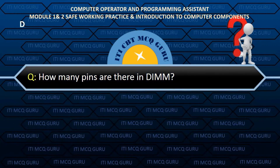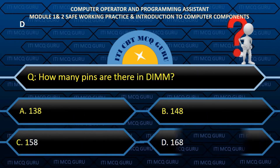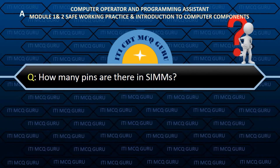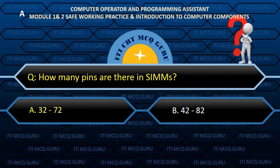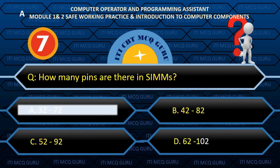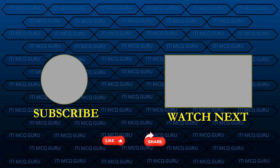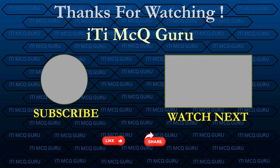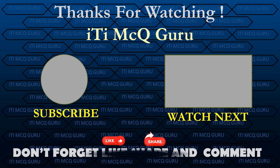How many pins are there in DIMM? Answer: D. 168. How many pins are there in SIMM? Answer: A. 32–72. For more MCQs, join the MCQ group and please like, share, and comment.